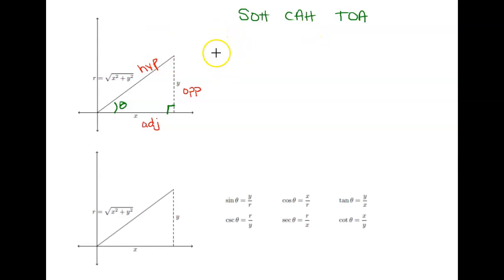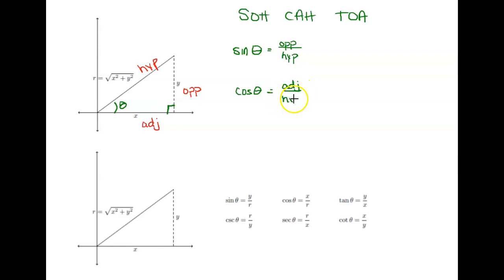Let's review our SOH-CAH-TOA ratios again. Sine of theta is opposite over hypotenuse. Cos of theta equals adjacent over hypotenuse. And finally, tan is equal to opposite over adjacent. This is the stuff we've been using for a few years now to solve these triangles.